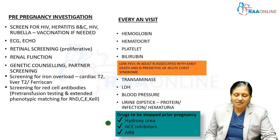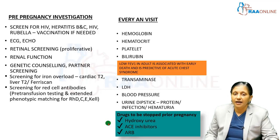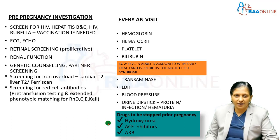Before pregnancy, investigations for sickle cell anemia patients should include screening for HIV, hepatitis B and C, and rubella vaccination should be given before becoming pregnant. We should also know the patient's cardiac status, requiring ECG and echocardiography.